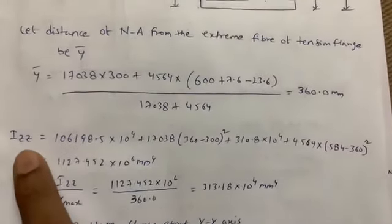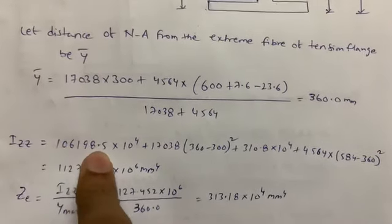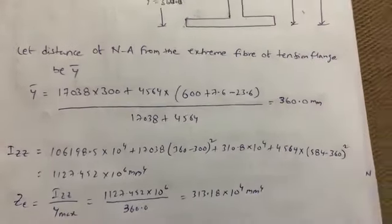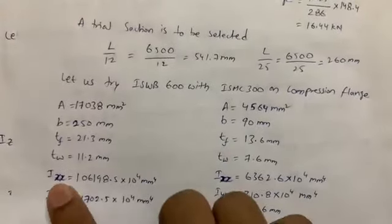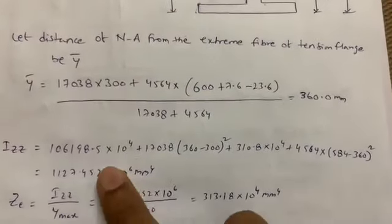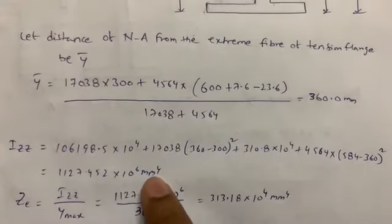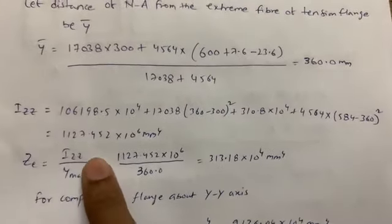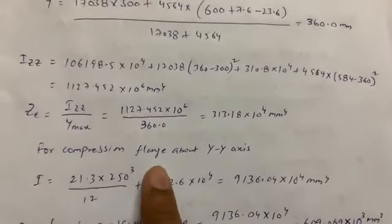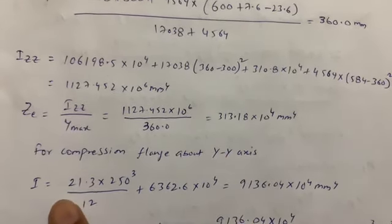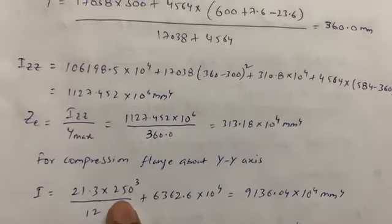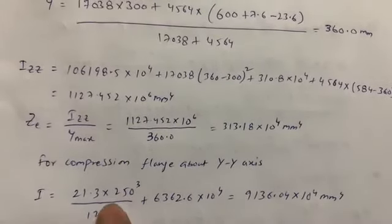For moment of inertia: IZZ = IXX + A·yc². The IXX values for ISWB 600 and ISMC 300 are taken from the steel tables. Substituting gives IZZ. Then ZD (elastic section modulus) = IZZ / ymax. For the compression flange about the YY axis, the formula bd³/12 is applied (rectangular section moment of inertia), giving the compression flange IYY.